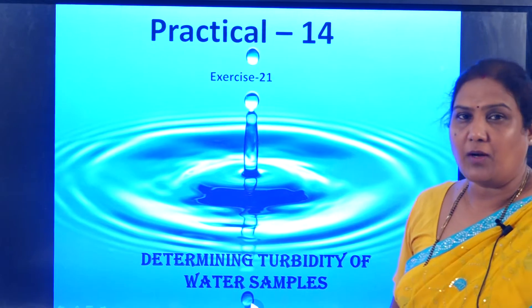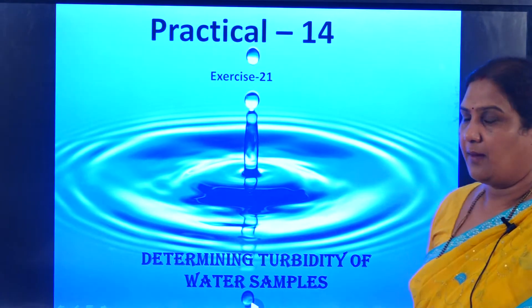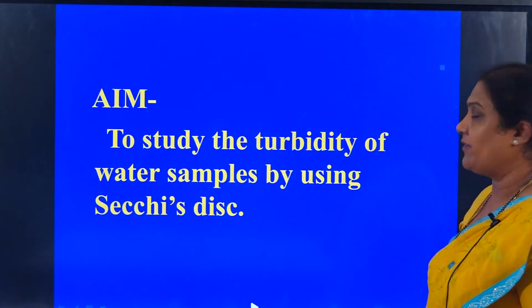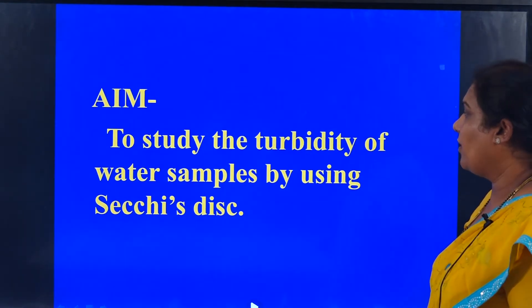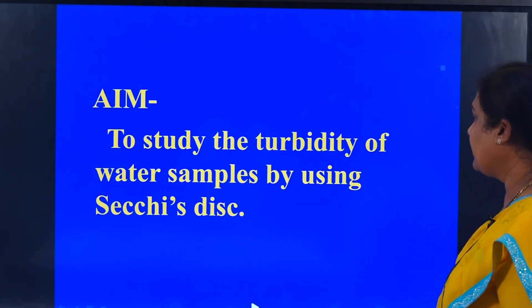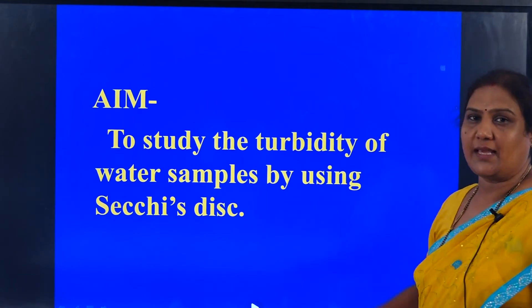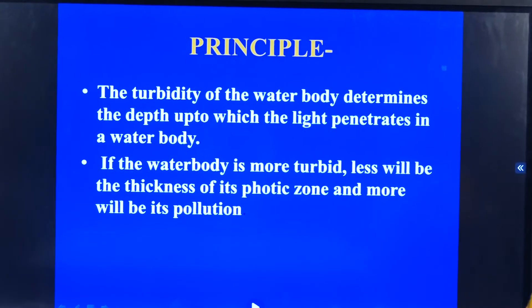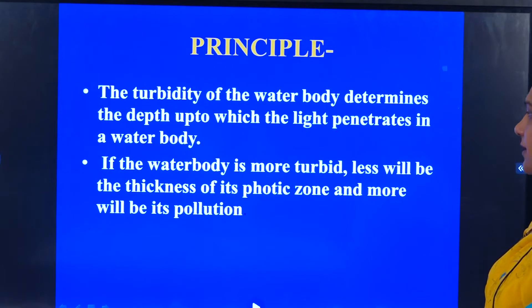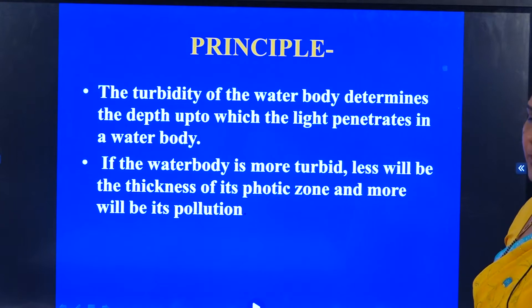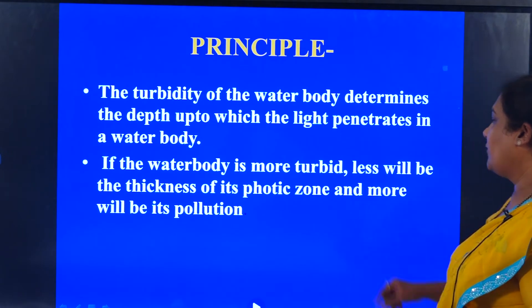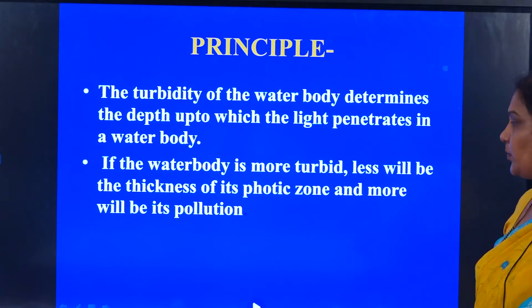If the water is crystal clear, it is portable. But when there is turbidity, there are so many impacts that would be caused to the living organisms. The aim of this experiment is to study the turbidity of water samples by using a Secchi disc. The turbidity of the water body will determine the depth up to which the light penetrates into the water body. If the water body is more turbid, less will be the thickness of its photic zone and more will be its pollution.